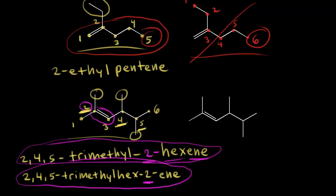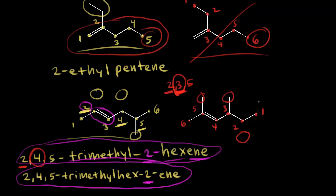What if you tried to number from right to left? Calling the rightmost carbon one, then two, three, four, five, six — you might think this is correct because methyl groups would land at two, three, and five. Applying the first point of difference rule, we have two versus two, but then three versus four, and three is lower. However, this numbering gives the double bond a position of carbon four, and our goal is to give the double bond the lowest number possible — over any alkyl groups. That's why 2,4,5-trimethyl-2-hexene is the correct IUPAC name.